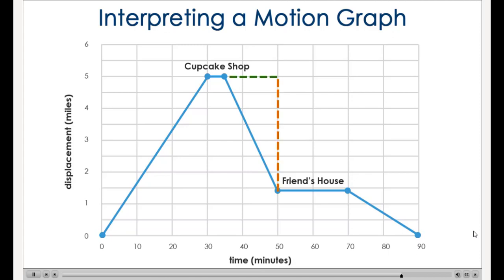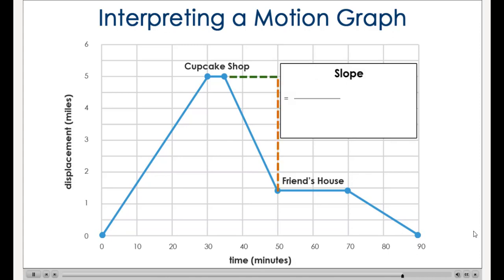What was your speed between the cupcake shop and your friend's house? We can calculate the slope of the line during this portion of the graph. After converting to miles per hour, we get negative 14.4 miles per hour. What does the negative sign mean in this context? It means that you are traveling opposite to the direction that we assumed to be positive. Since we assumed east was positive, you are traveling at 14.4 miles per hour west from the cupcake shop to your friend's house.